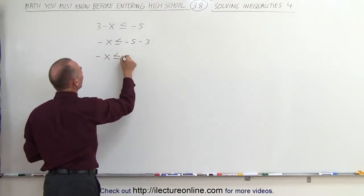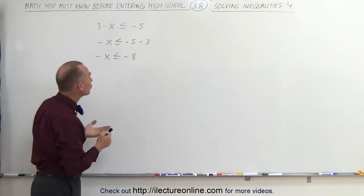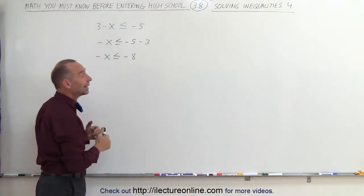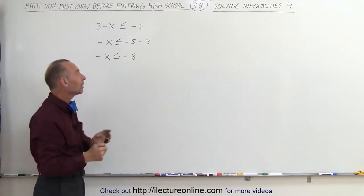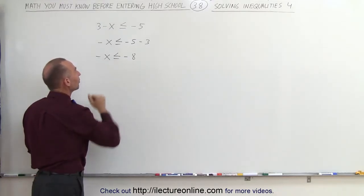But we're not looking for what minus x is equal to, we're looking for what x is equal to. So what we're going to do is multiply both sides of the inequality by negative 1. But when we do that, we have to flip the inequality symbol around.